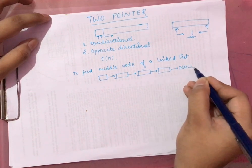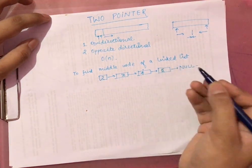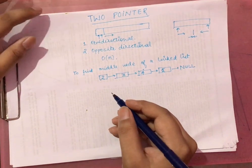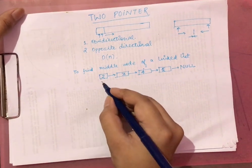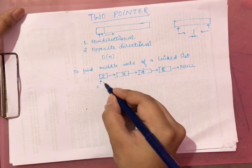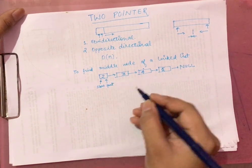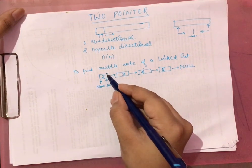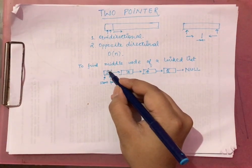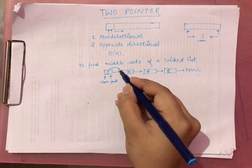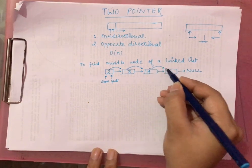Given a linked list — say 2, 3, 4, 5, 2 ending at null — we put a slow pointer and a fast pointer both starting at the head. The slow pointer moves one node at a time: first node, then second, then third, and so on.